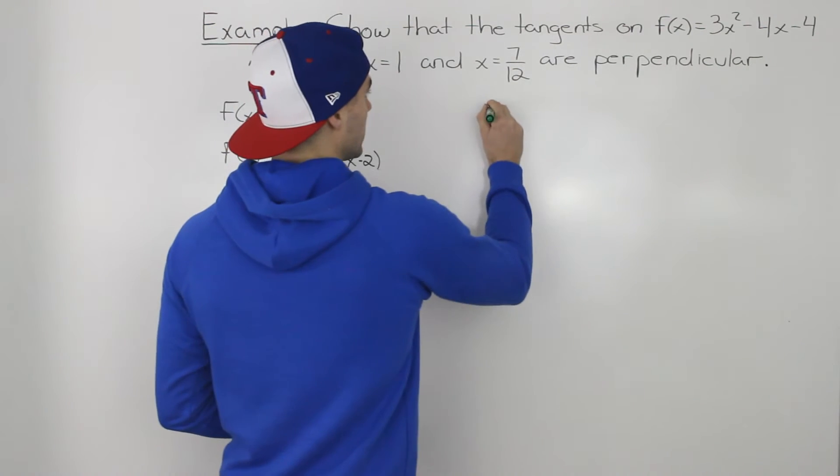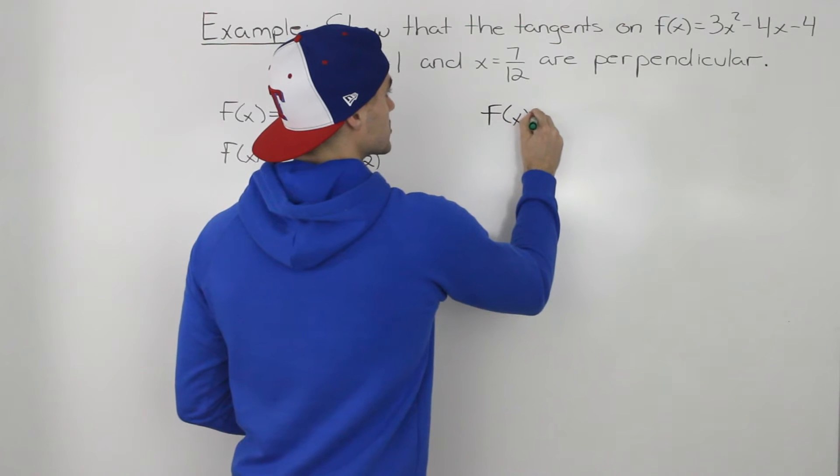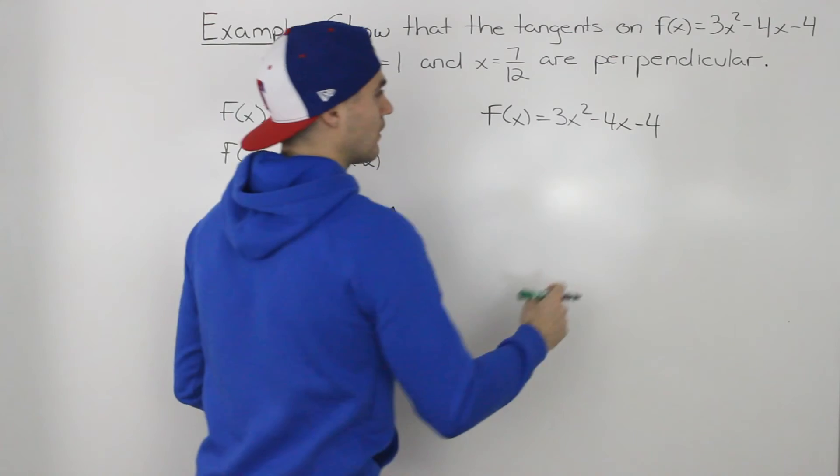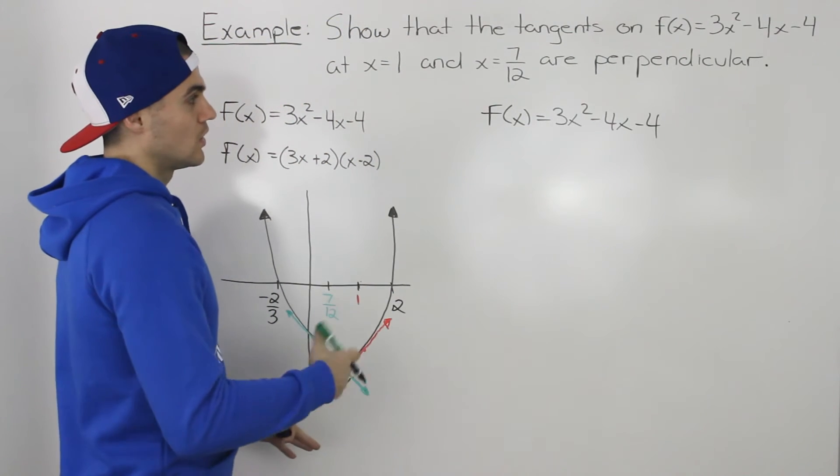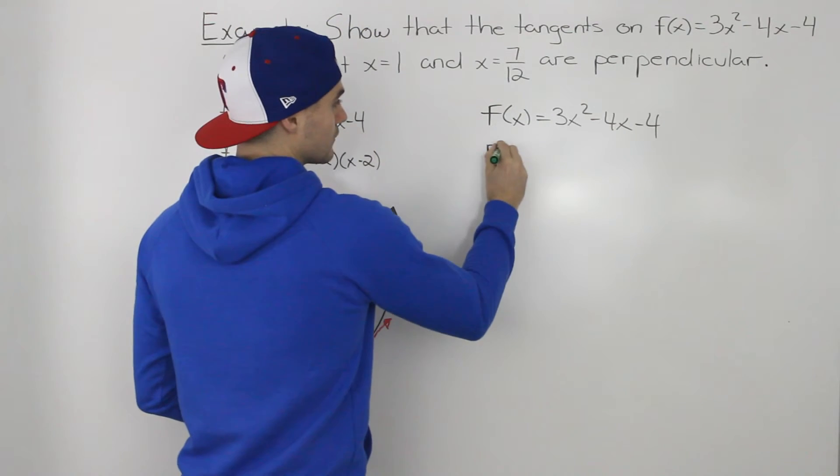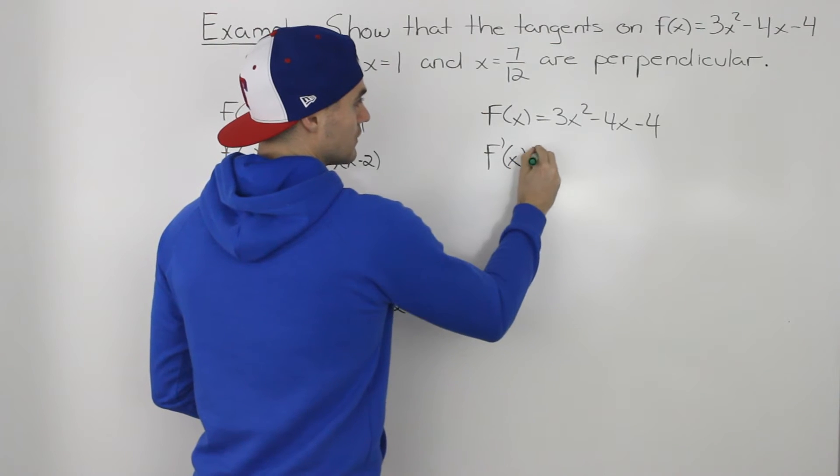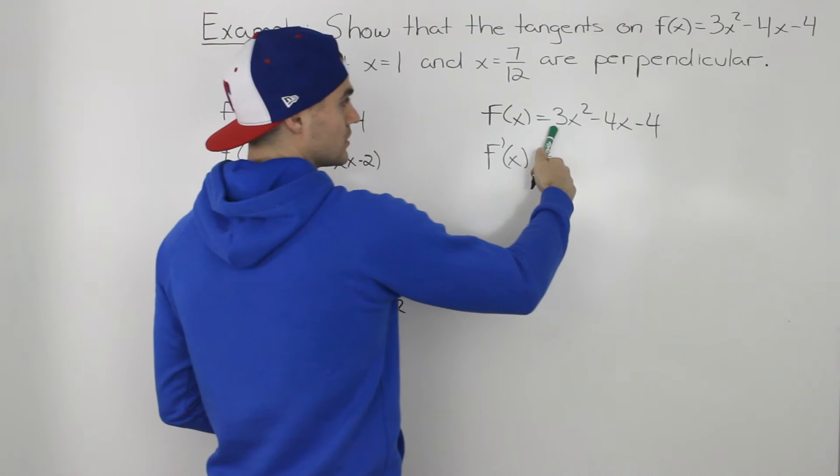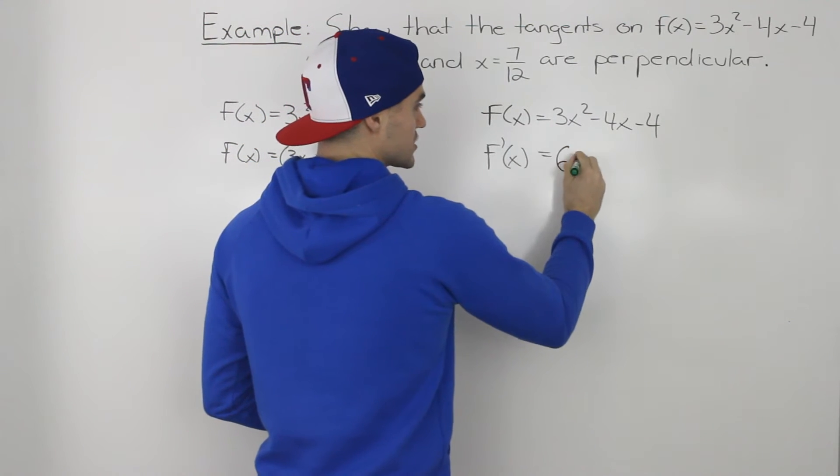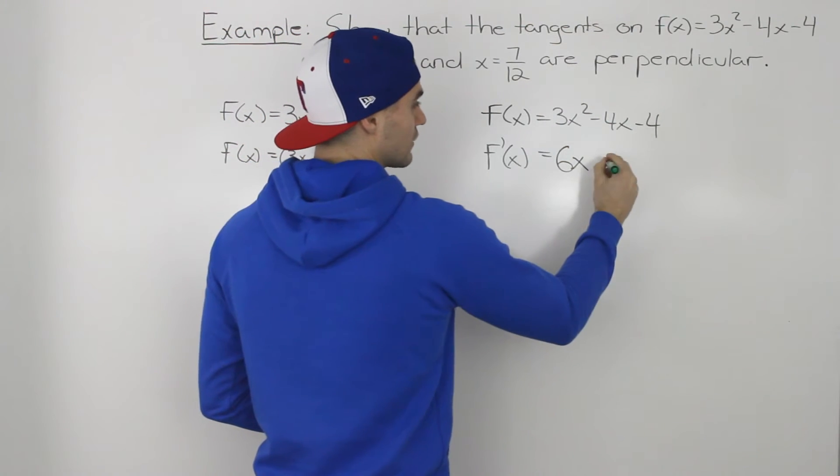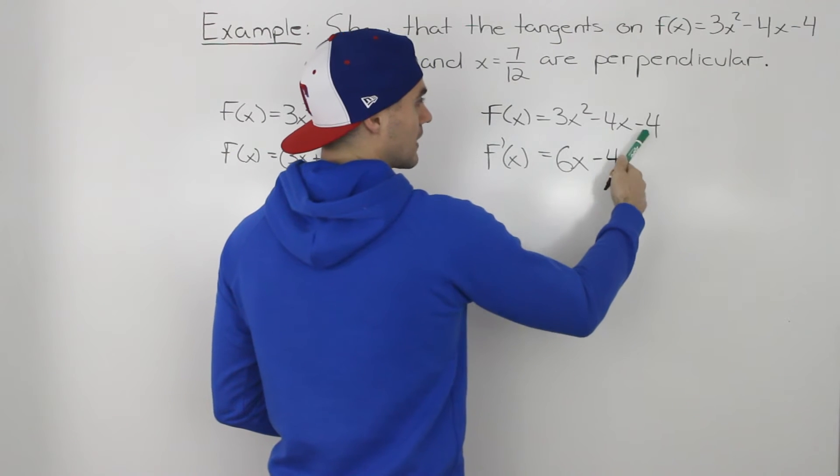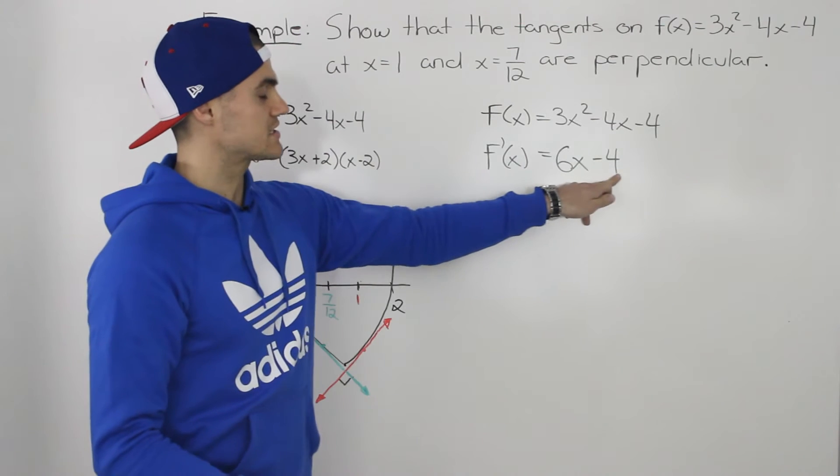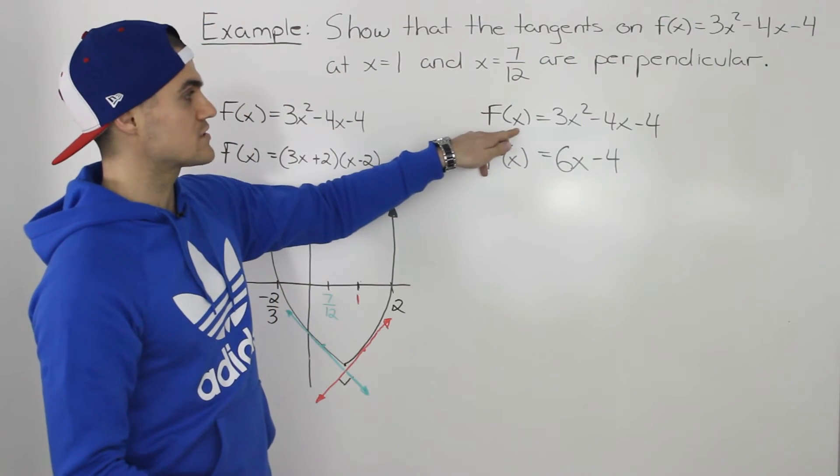Now, we have the function 3x squared minus 4x minus 4, and how can we find the slope of a tangent? Well, we can find the derivative. The derivative of this function, we would apply the power rule to each of these terms separately. So the derivative of 3x squared is just 6x, the derivative of negative 4x is just negative 4, and the derivative of negative 4 is just 0. So this here, 6x minus 4, is the derivative of this function.